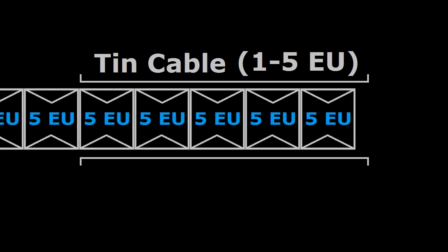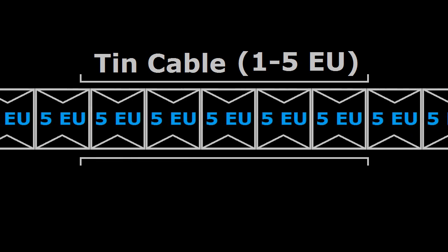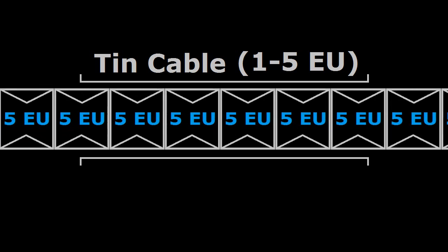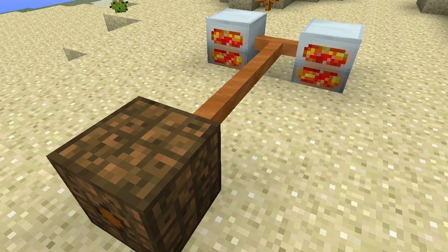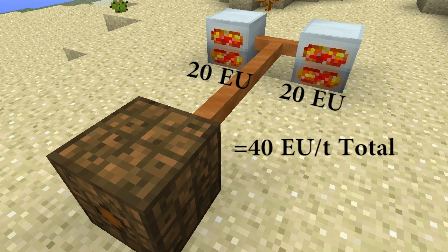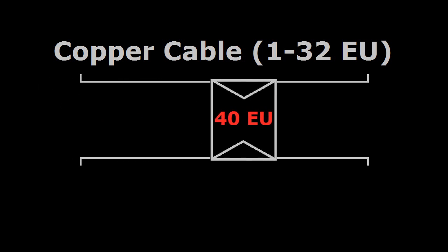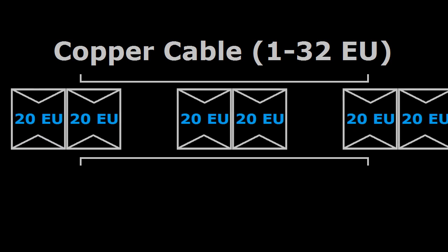Even though cables have a maximum packet size, they can actually transport an unlimited quantity of packets without being destroyed, as long as all the packets they're transporting are within their supported packet size. For example, the copper cable can support a maximum packet size of 32 energy units. If two geothermal generators are connected together, they'll be outputting at a combined rate of 40 energy units per tick. At first it might seem like that's too much for the copper cable to handle, but it's not — because the 40 EU is actually made up of two separate 20 EU packets.